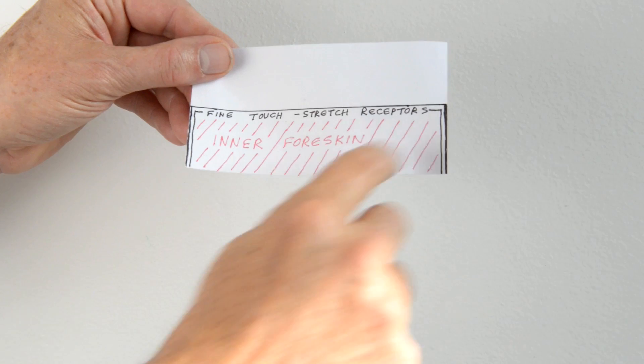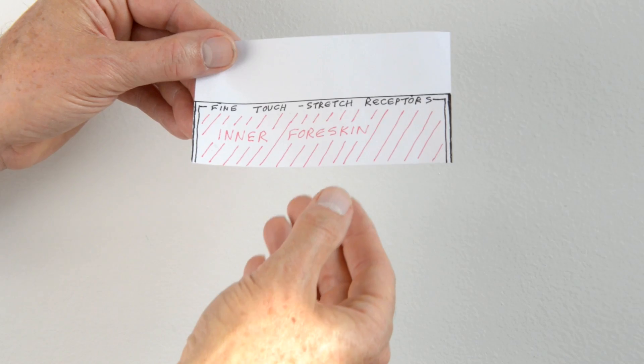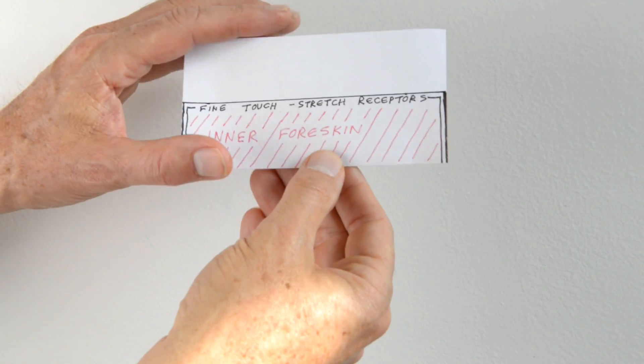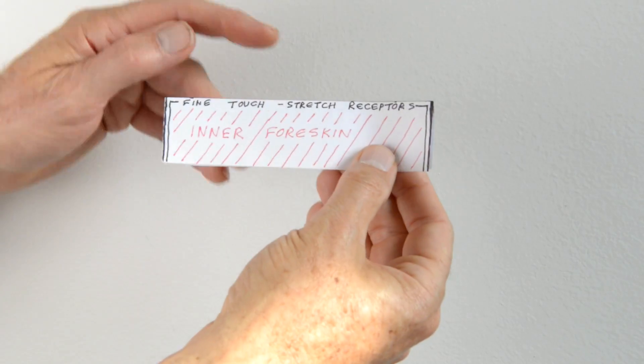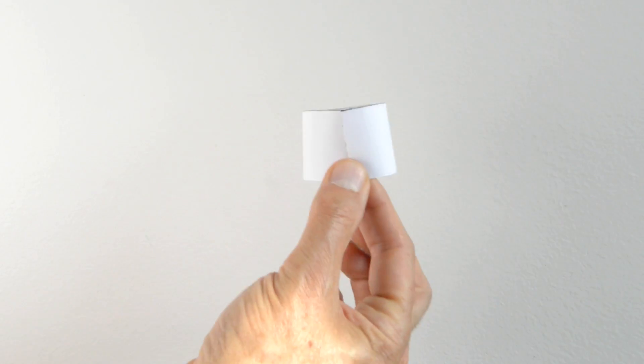And this is the nerve that carries the sensation to the frenulum and back into the body. That's folded and wrapped once more round our imaginary penis, giving a representation of the intact foreskin.